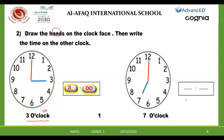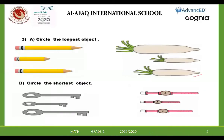So the hour here will be 7, and the minutes — you must put two zeros. We said 'o'clock' means I don't have any extra minutes, so I write 7:00.